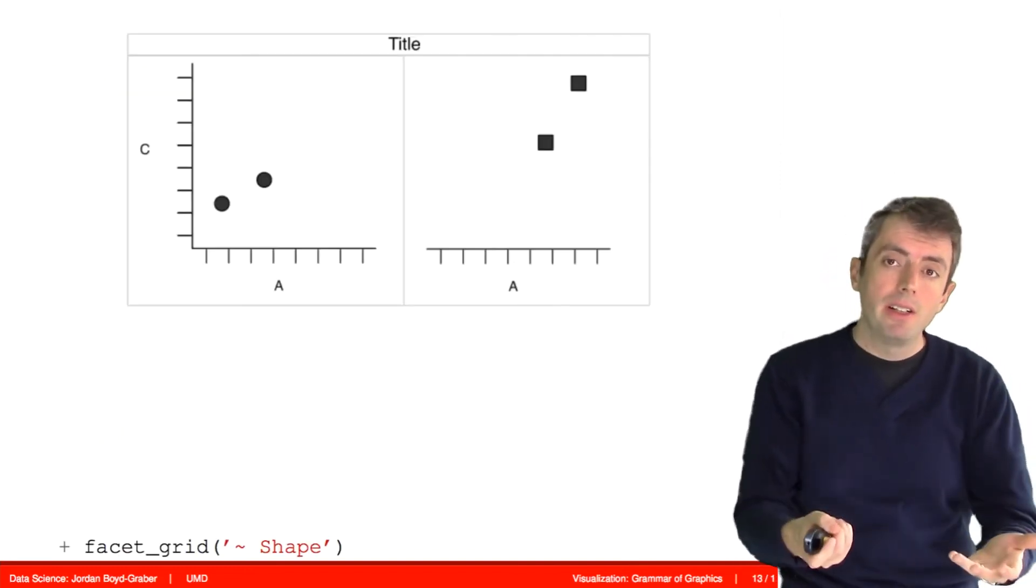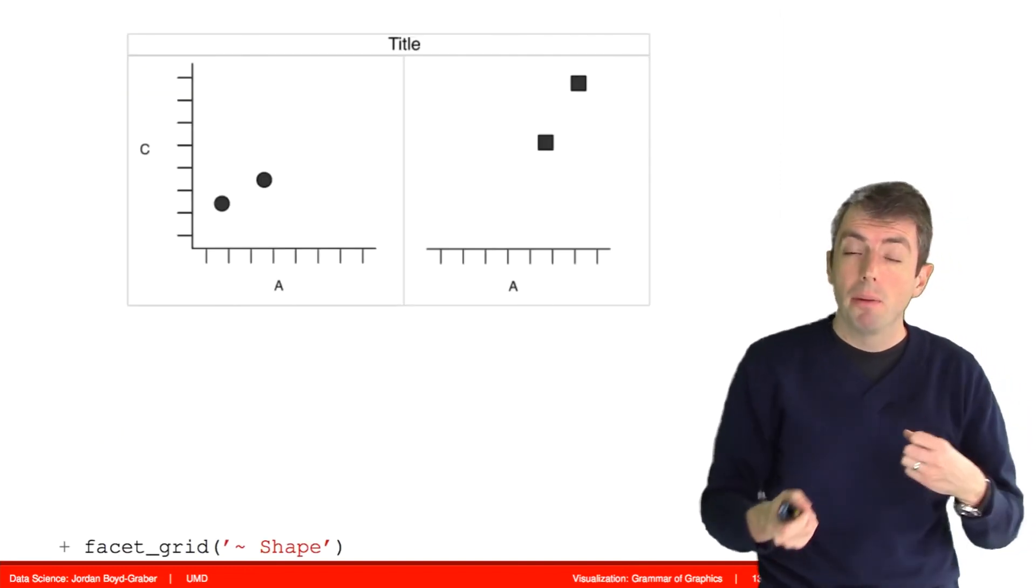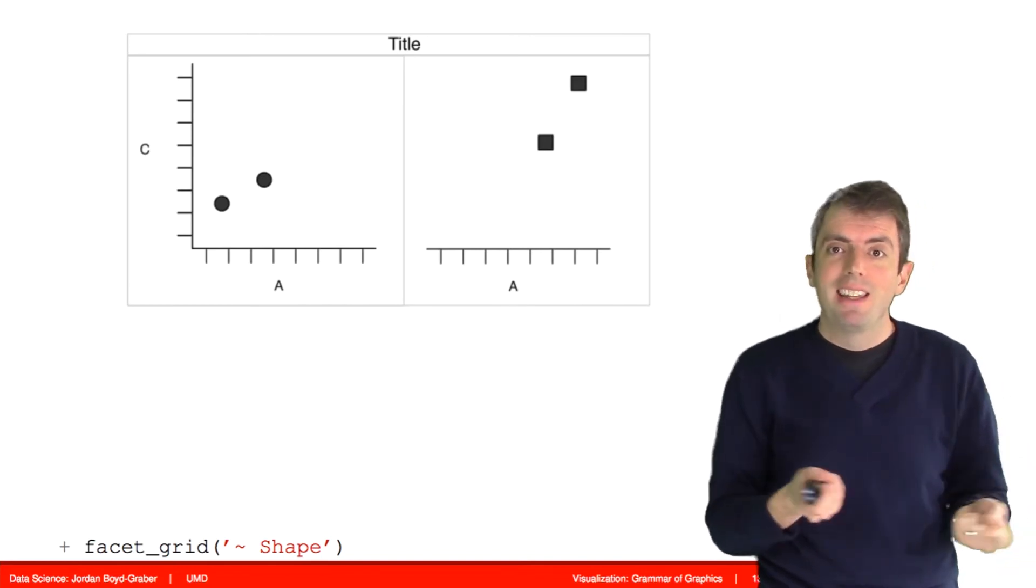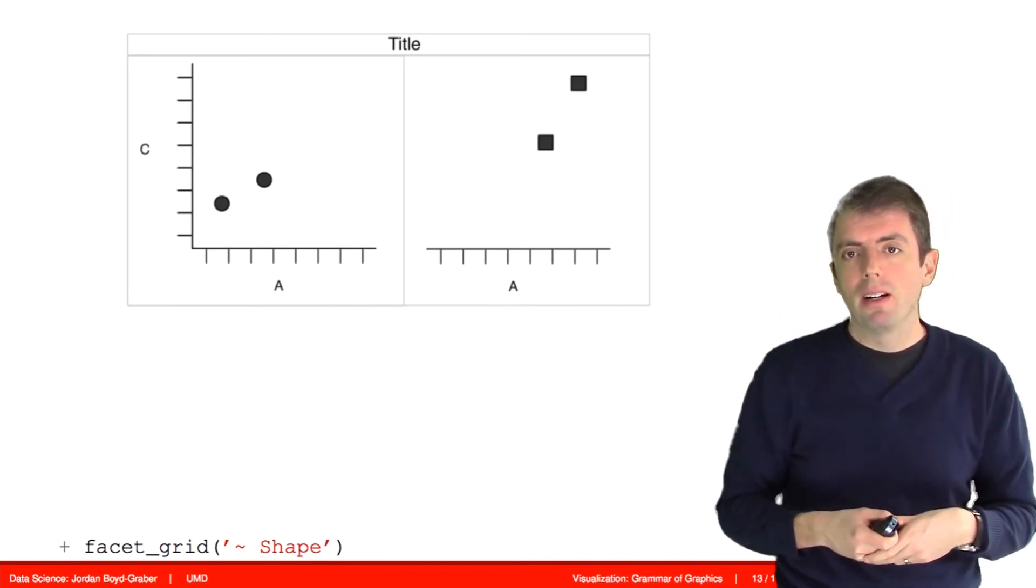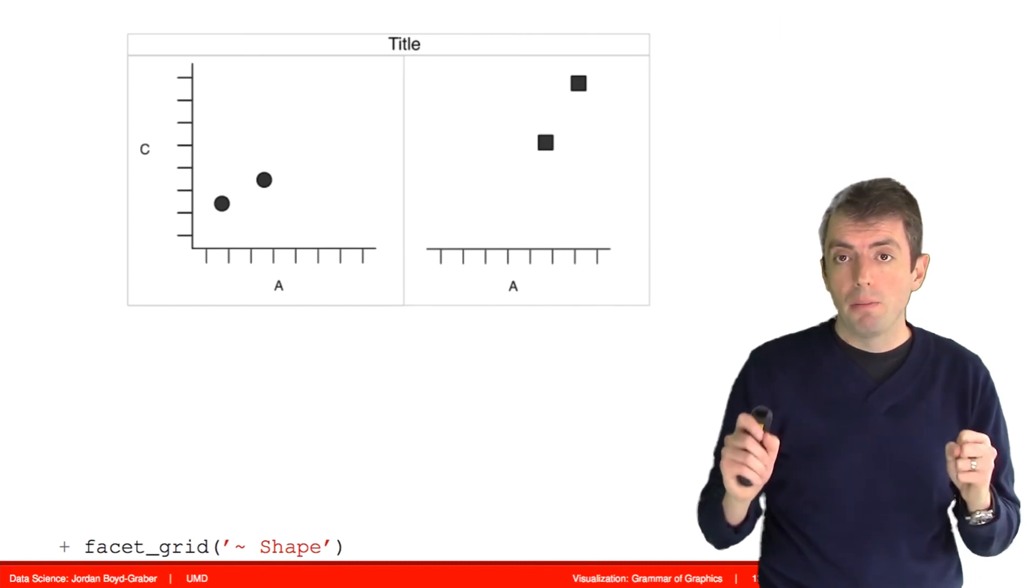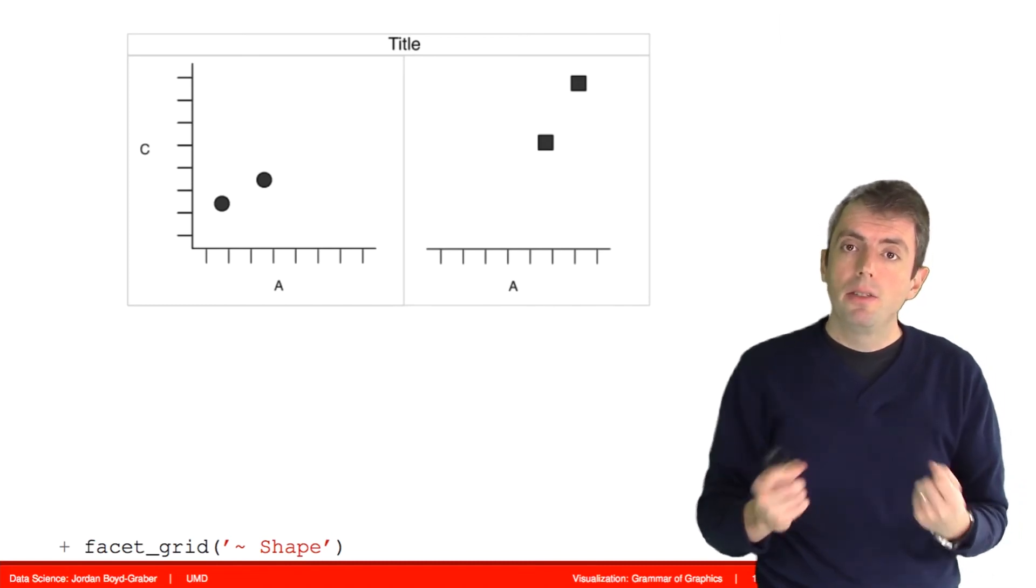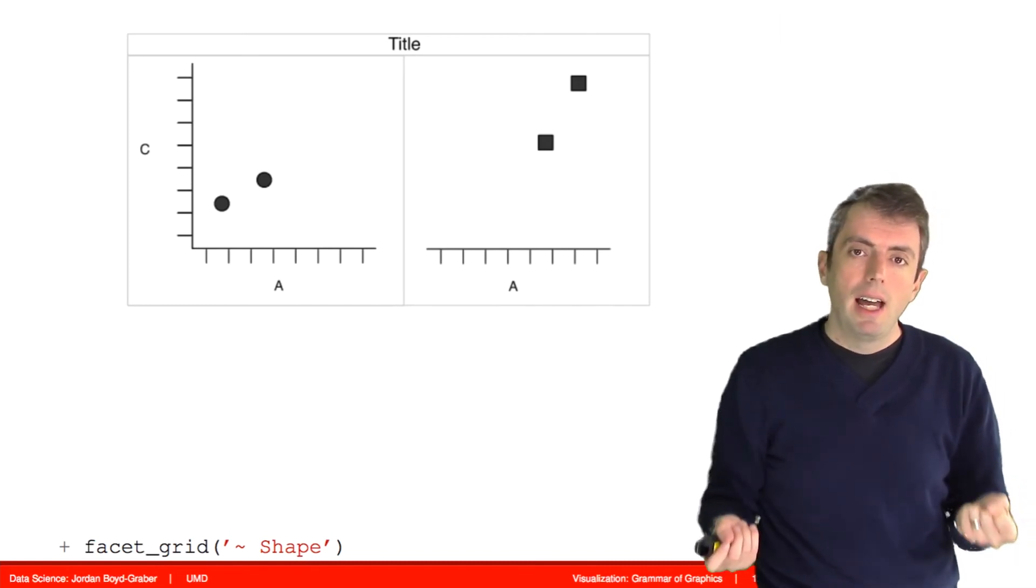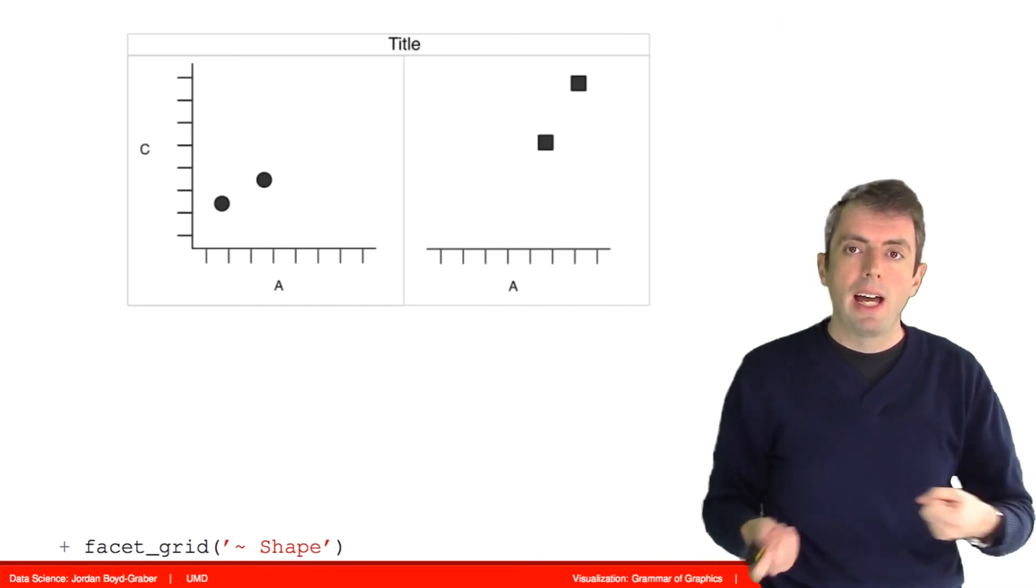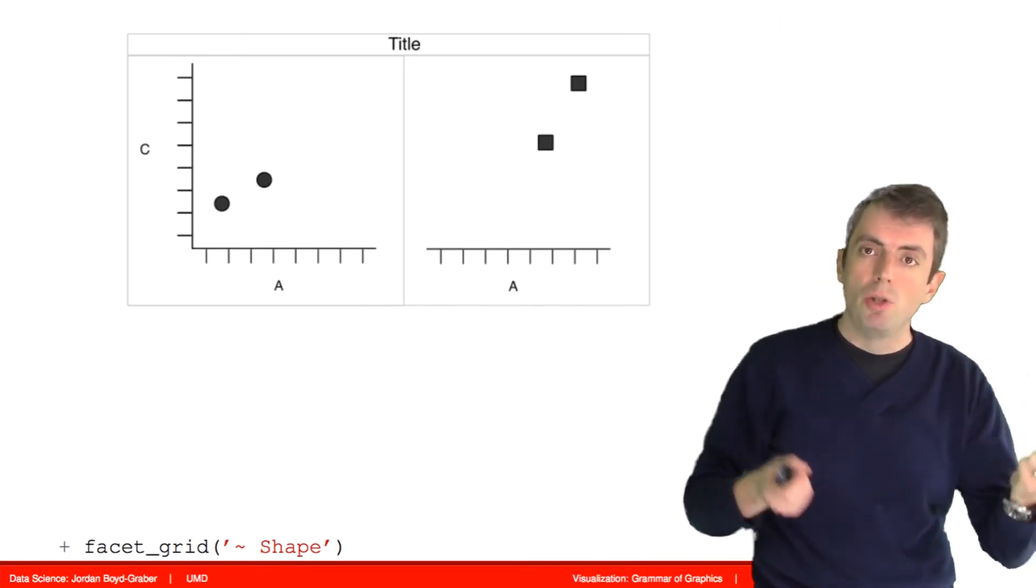Let's go back to our toy dataset where we're trying to compare these two things, the circles and the squares. Another thing that you can do to help show the differences is to use what's called a faceted graph.